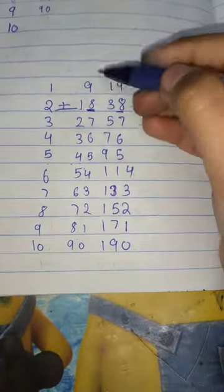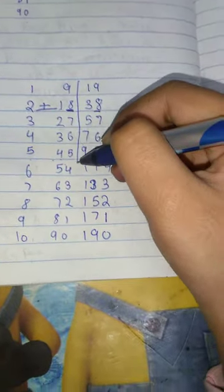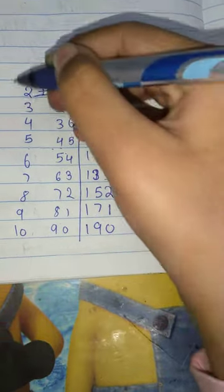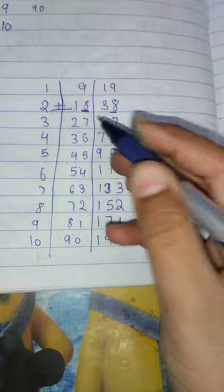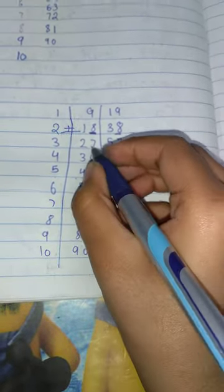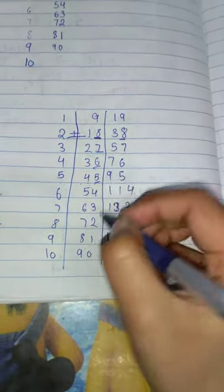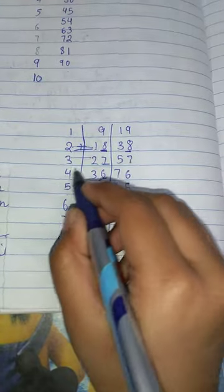This is the easy way. The last number as it is, and then we will add these both numbers.